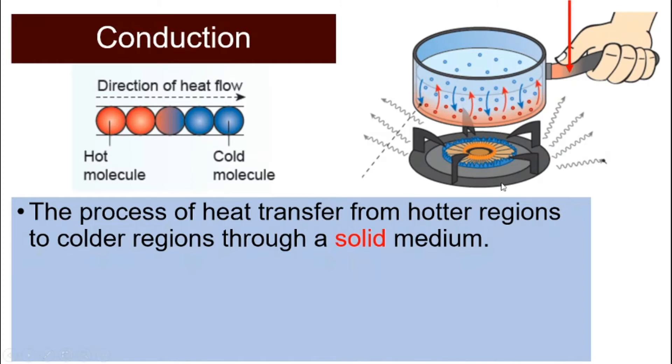So in this example, when you heat up a pot of water, what is a solid here? Is that the pot or is it the water? It's actually the pot. So how does heat transfer from the bottom of the pot throughout the whole pot?